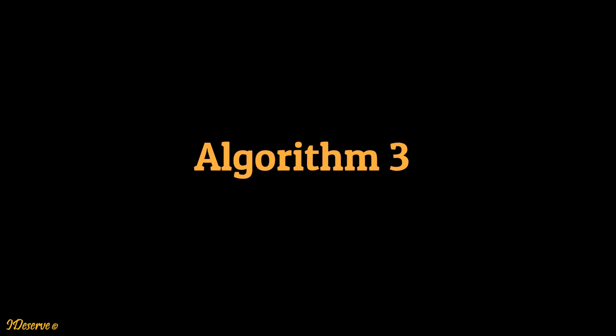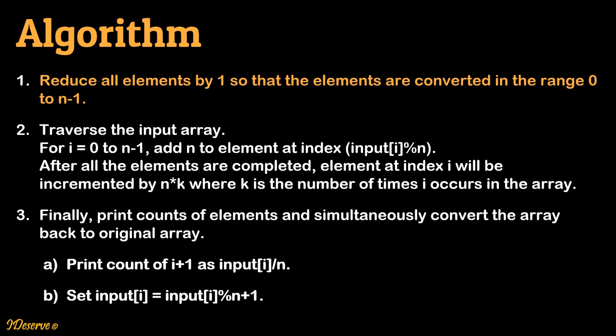Now let's look at the optimized algorithm. These steps will be explained in detail with an example. First step is to reduce all elements by 1 so that elements are converted to the range 0 to n-1. In the second step, one by one we process each element. Whenever we process the current element, we increment count by adding n to element at index input[i] mod n. After all elements are processed, element at index i will be incremented by n*k, where k is the number of times i occurs in the array.